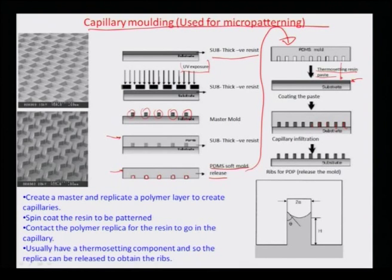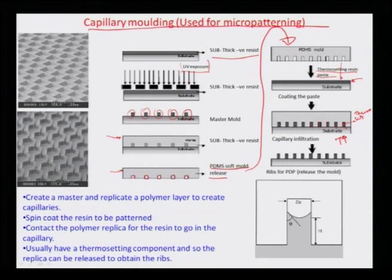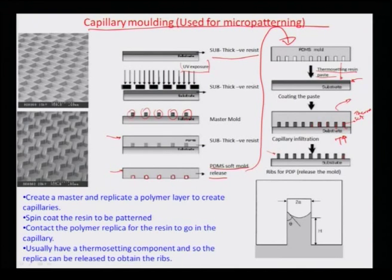When the PDMS mold is pressurized on top of the thermosetting resin, the resin goes into the cavities and fills them, though possibly not completely due to surface tension effects. Temperature is then increased so the polymers molded into the capillaries are thermoset, resulting in hard thermosetting resin sitting on top of the wafer. The PDMS is then removed while the resin remains bonded to the substrate, producing a very dense array of micro pillars.